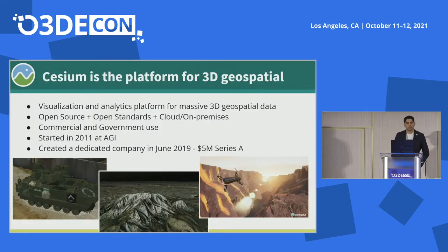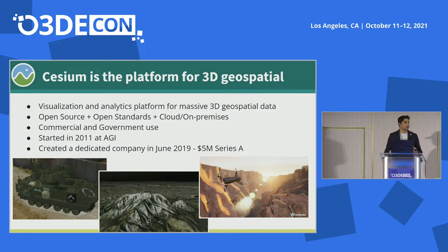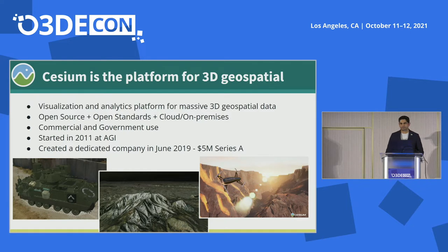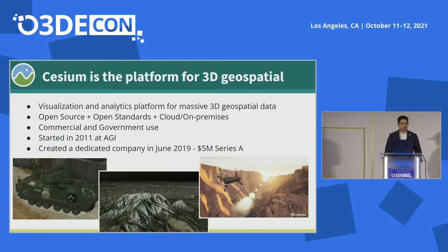Quick background on Cesium. We are a visualization and analytics platform for massive 3D geospatial data. We've done a lot with open source and open standards, as well as building capabilities into the cloud to make 3D geospatial possible and accessible to everyone. The Cesium.js project itself started in 2011, and since then we've open sourced it, built a platform on it, and now we are building an ecosystem around many more game engines to support 3D tiles and 3D geospatial.